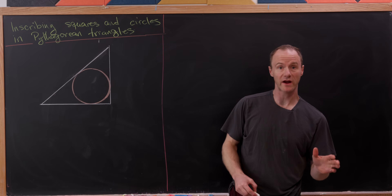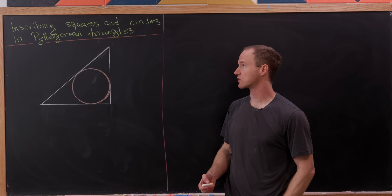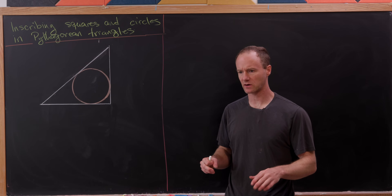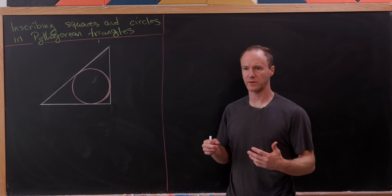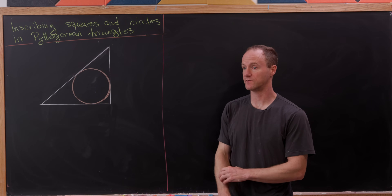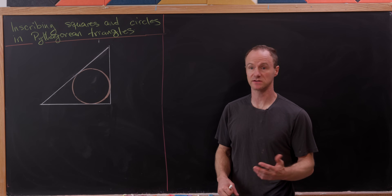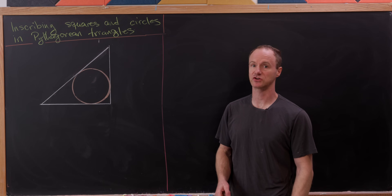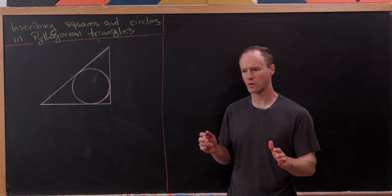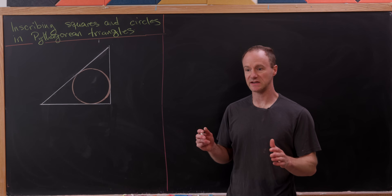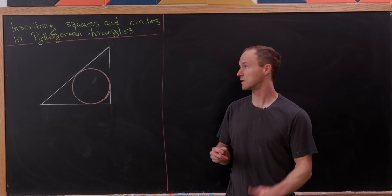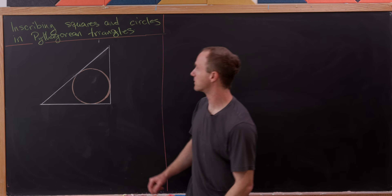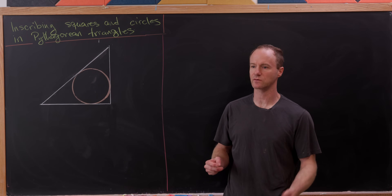Today I want to explore squares and circles that have been inscribed into Pythagorean triangles. In particular, I want to look at what are the possible radii of circles inscribed inside the triangles, and what size of squares can be inscribed inside the triangles as well, and answer the question: are these necessarily integral or non-integral?